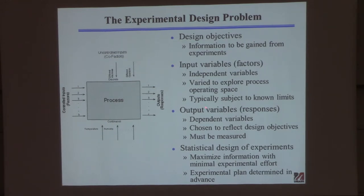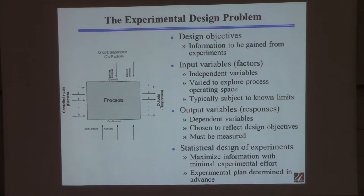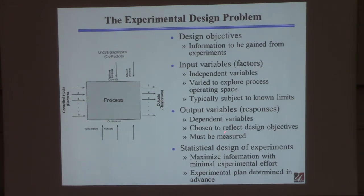Factors typically have lower and upper bounds — for example, a reactor will have safety and material constraints on temperature. These I'll call inputs or factors interchangeably. The outputs — dependent variables — are called responses in the design world. Responses must be chosen to reflect what you hope to learn from the experiment; if you care about molecular weight distribution, you need outputs that measure it.